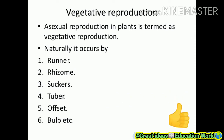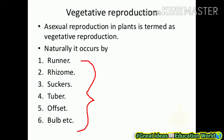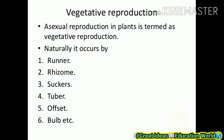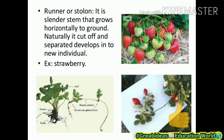Next is vegetative propagation. What is vegetative propagation? Asexual reproduction in plants is termed as vegetative reproduction. It naturally occurs by runner, rhizome, sucker, tuber, offset, and bulb. Vegetative propagation is an important part of asexual reproduction in plants. Next is runner or stolon: it is a cylindrical stem that grows horizontally along the ground naturally. It is cut off, and when separated, it develops into a new individual. Example: strawberry.